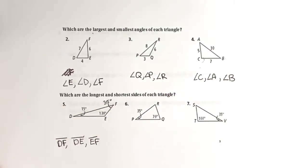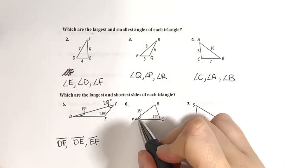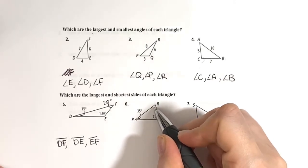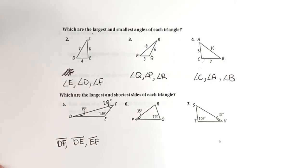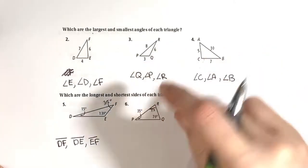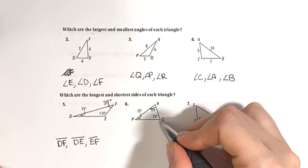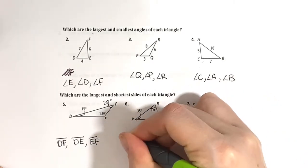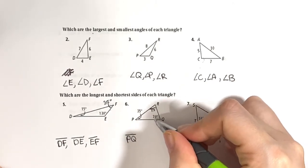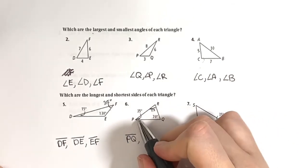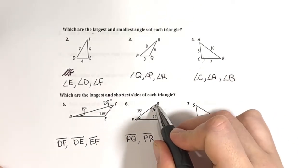Next example: angles 35° and 70° given, missing angle R. Calculating: 180 minus 70 minus 35 equals 75°, which is the biggest angle. So side PQ is the longest. The 70° angle gives side PR as the second longest, and angle P at 35° gives side RQ as the shortest.